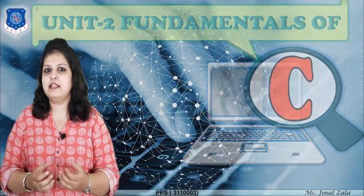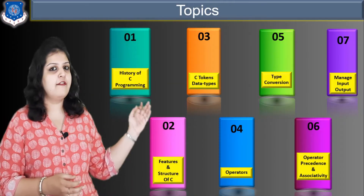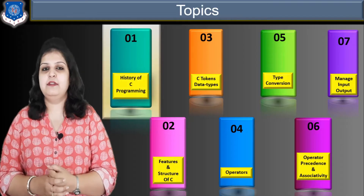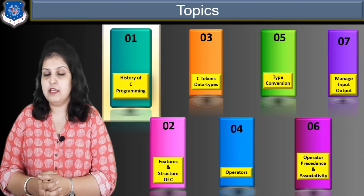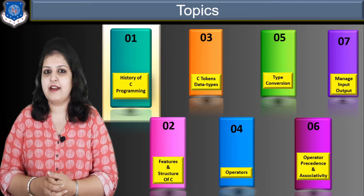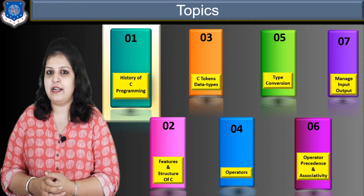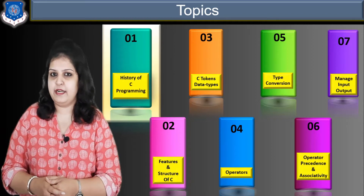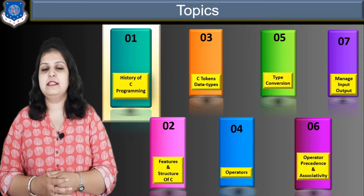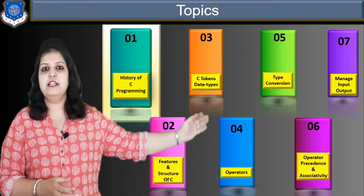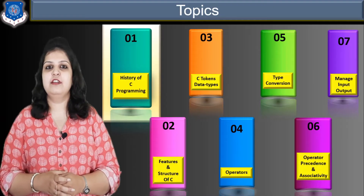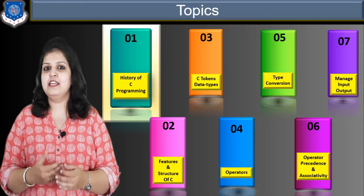Let us see what are the topics which we have to learn in this module. Our first topic is history of C programming — what is the origin of C programming. Then next is features and structure of C programming. Structure is a most important topic because for making a program we need knowledge about the structure. Then after, C tokens and different data types, different operators in detail, different type conversion methods and operator precedence, and last topic is managed input-output. Today in this video lecture we are going to discuss the first two topics. Let us start with the history of C programming.